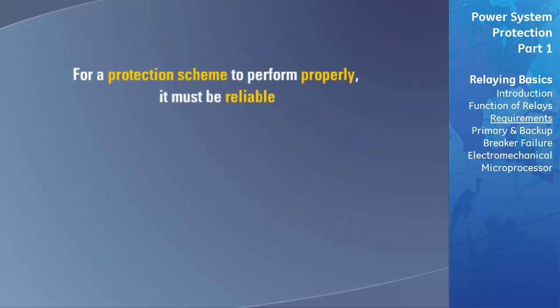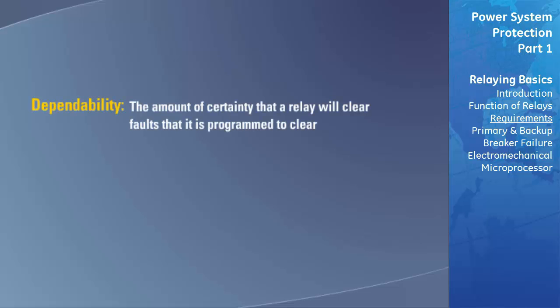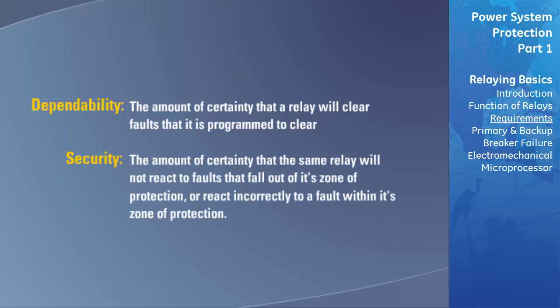For a protection scheme to perform properly, it must be reliable. With respect to protective relaying, reliability is made up of two components, dependability and security. It is important to understand the difference between dependability and security. Dependability is the amount of certainty that a relay will clear the faults that it is programmed to clear, whereas security is the amount of certainty that the same relay will not react to faults that fall outside of its zone of protection or react incorrectly for a fault within its zone of protection.